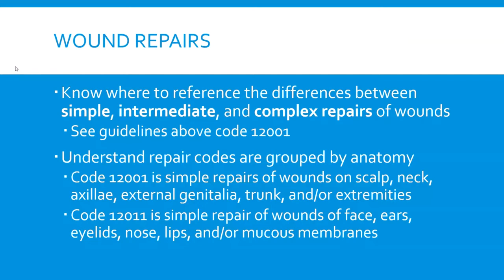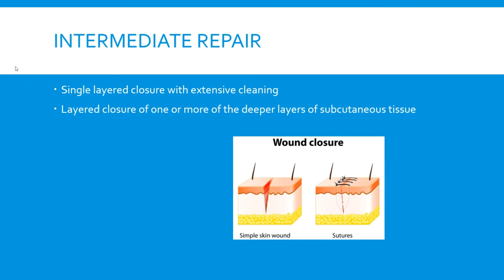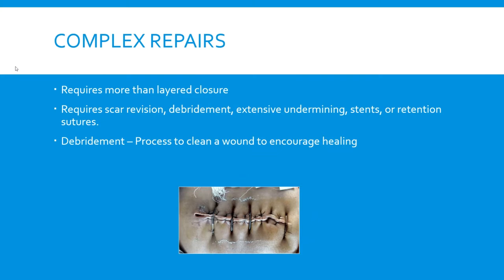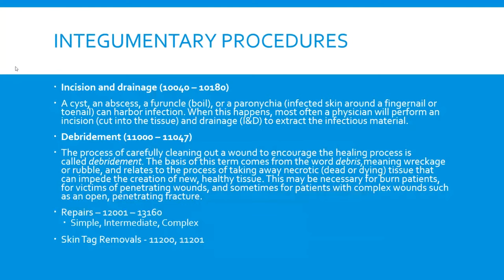Code 12011 is a repair of wounds of the face, ears, eyelids, nose, lips, and mucous membranes. So be sure that you pay close attention to the code description. A simple repair is one layer, very easy to administer. Intermediate repairs go by the term 'layered,' so there's more than one layer involved. Complex repairs have more than one layer of closure and can include scar revision, debridement — which is excess cleaning of debris, such as glass shards that have gotten into the wound — stents, or retention sutures. Single layer closure with extensive cleaning is considered intermediate. You're going to probably see a question about that on the exam, and that is in the guidelines also.